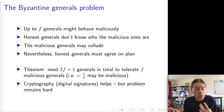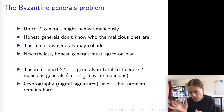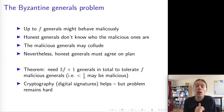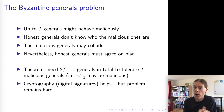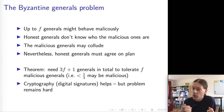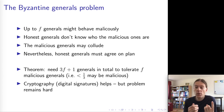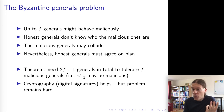There are several variants of the Byzantine generals problem, but a typical result is that if we have at most f malicious generals, we need at least 3f + 1 generals in total to tolerate those f malicious ones. That means fewer than one third of the total number of generals can be malicious. So if we have three generals and one is malicious, the problem is unsolvable. To tolerate one malicious general, we need at least four generals total — three honest and one malicious.